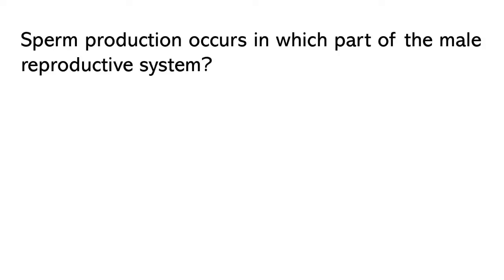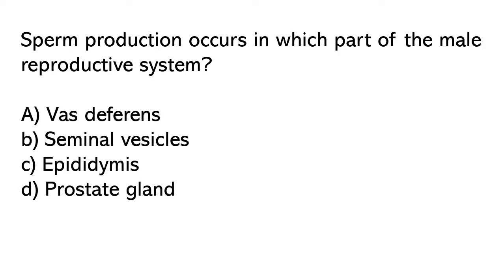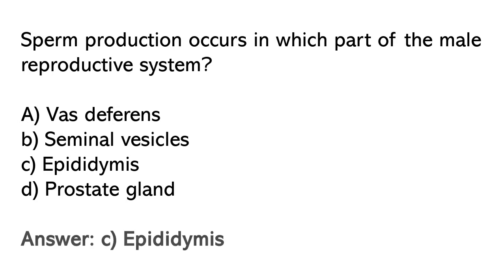Sperm production occurs in which part of the male reproductive system? Options: A) Vas deferens, B) Seminal vesicles, C) Epididymis, D) Prostate gland. So the correct answer is option C. Epididymis.